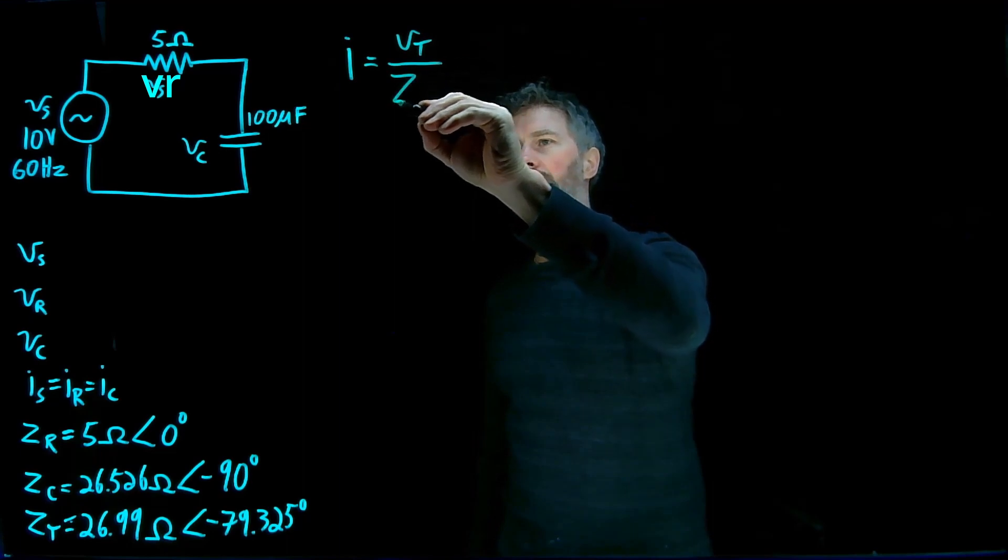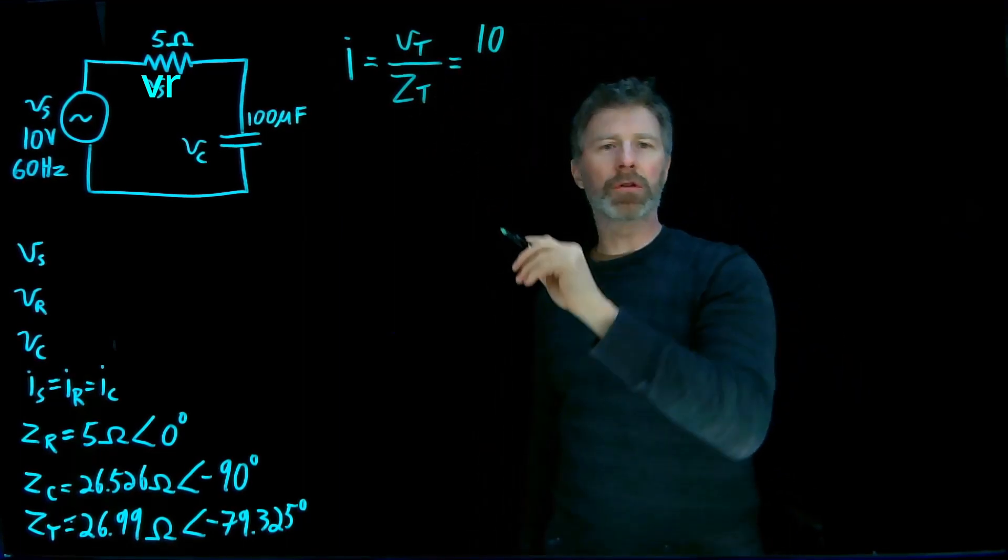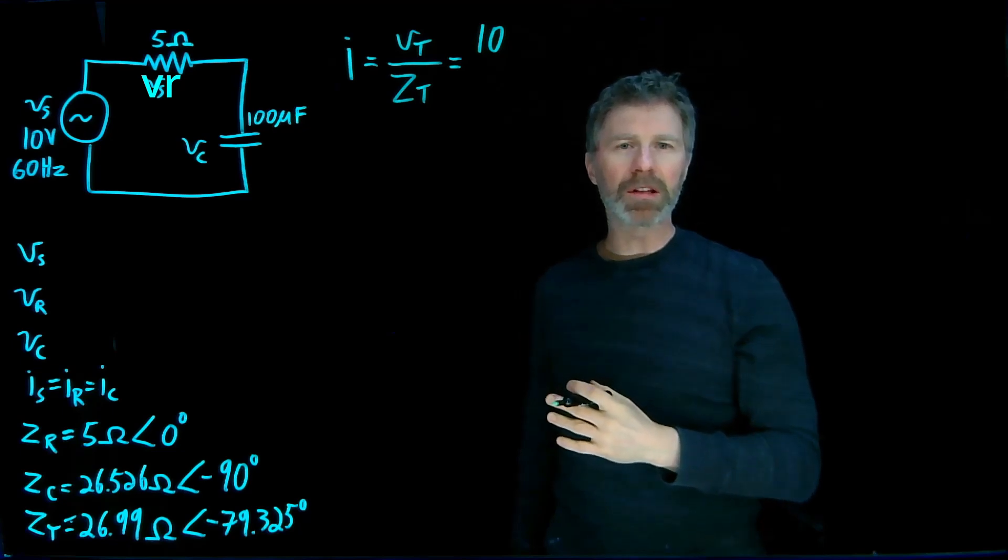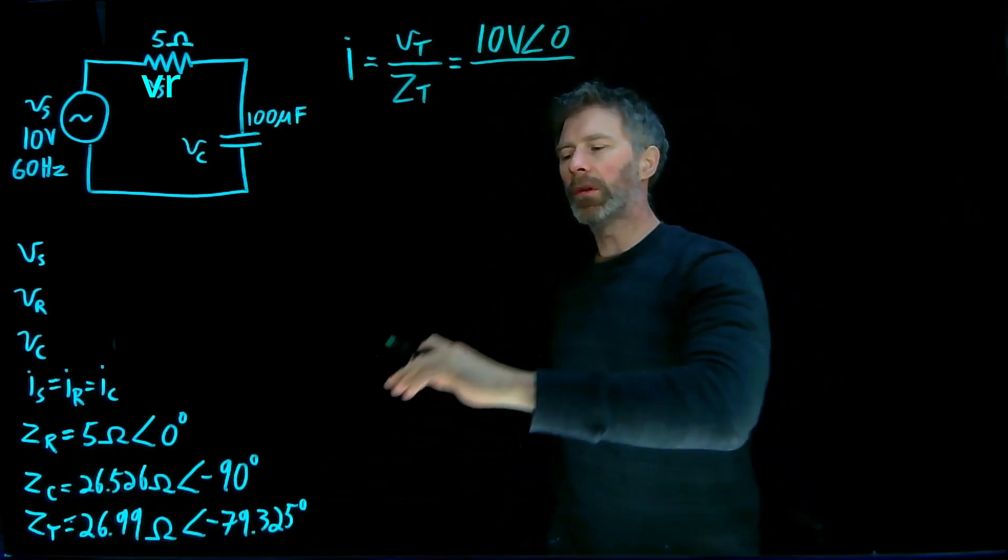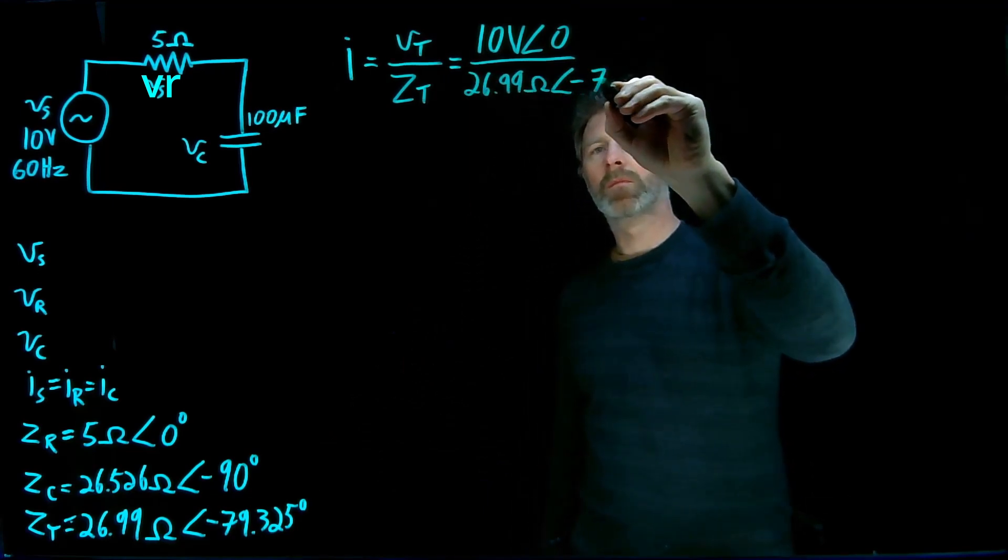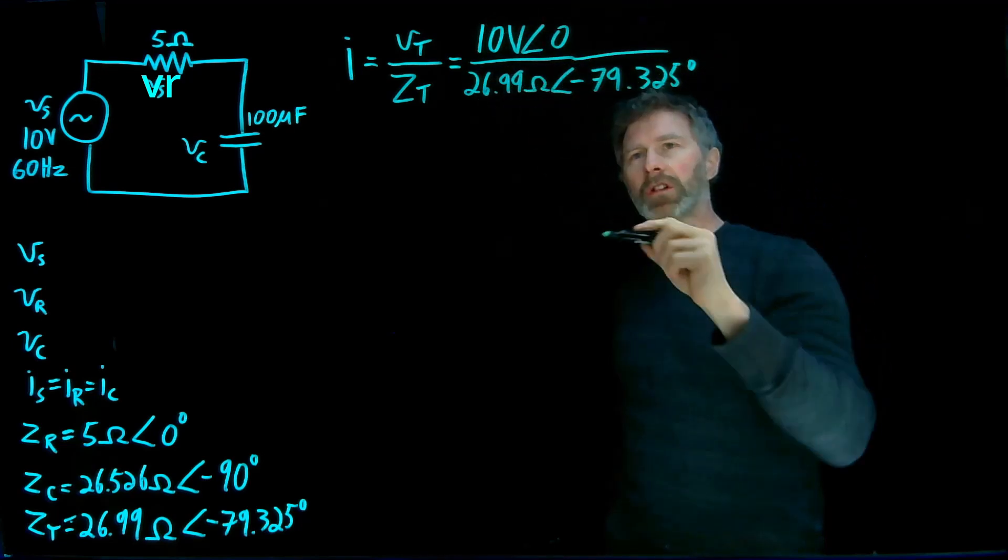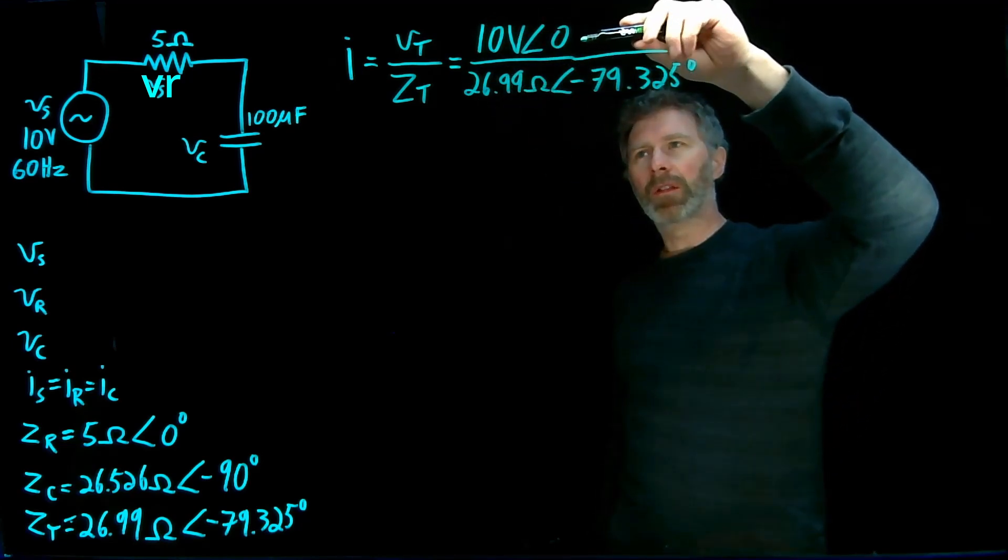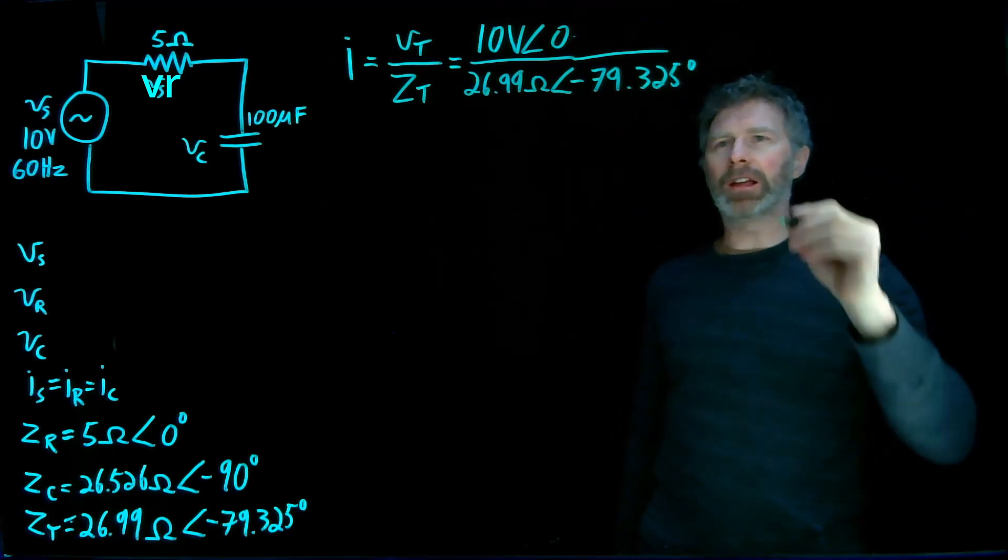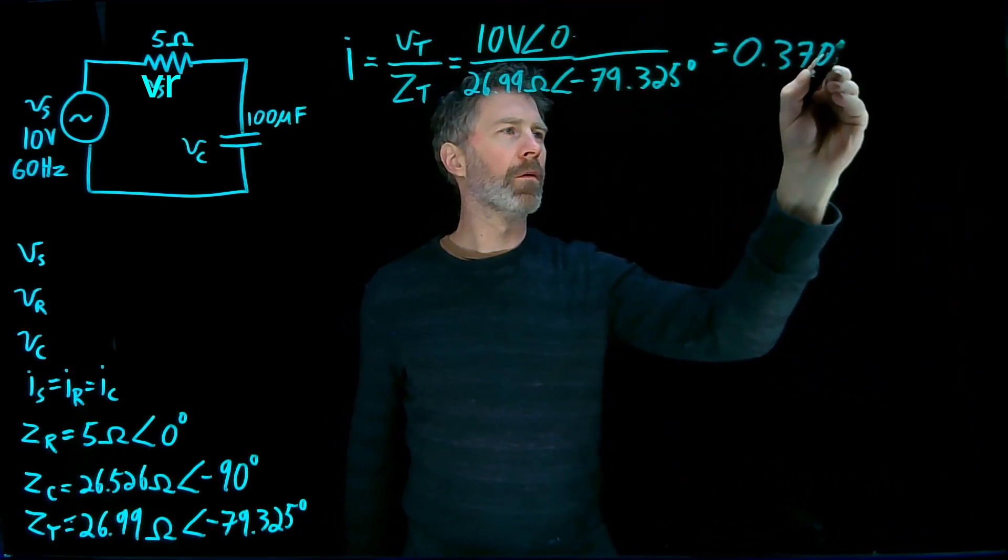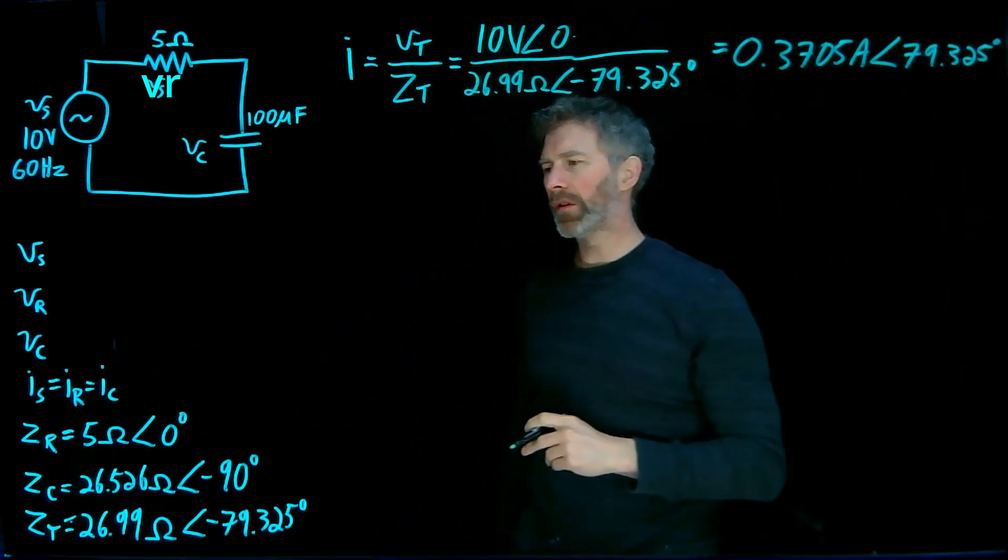It's going to equal the total source voltage divided by that total impedance. So we can just call it I, we don't need a subscript because it's the same current for everything. The total voltage over total impedance, which is that 10 volts with a phase angle of zero. Remember, dividing is easier in polar notation. When we're doing this division, the magnitude parts are divided and the numerator angle is subtracted from the denominator angle.